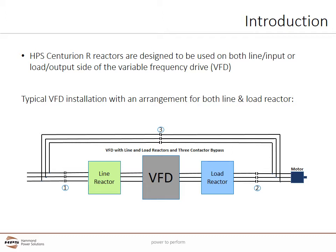HPS Centurion R Line Reactors are designed to be used on both the line or input side of a VFD and the load or output side of the VFD. There is no derating required. The same reactor size can be used on either the load or line side. The diagram below shows a typical VFD installation with reactors on both the line and load side.